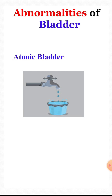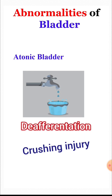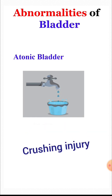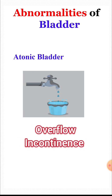The first one is atonic bladder. In this, there is destruction of the sensory nerve fibers or deafferentation, for example, by crushing injury. The effect is that the reflex contractions of the bladder are abolished, but some contractions do occur because of the intrinsic response of the smooth muscle to the stretch. The bladder fails and is over-distended, due to which overflow incontinence occurs.